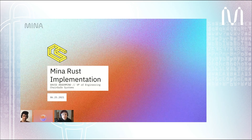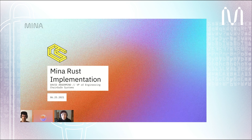Hey everyone, my name is David Ancimino and I am VP of Engineering at ChainSafe Systems. We are a 60-person blockchain R&D shop founded in Toronto, Canada. Today I'm here to introduce the Rust implementation of the MENA protocol that we have recently begun working on.